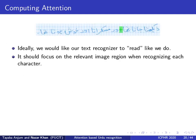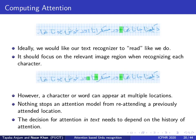Ideally, we would like our text recognizer to read like we do — focusing on the relevant image region when recognizing each character or word. However, for images containing text, a character or word can appear at multiple locations. Nothing stops an attention model from re-attending a previously attended location or from giving the right answer by attending the wrong location. Therefore, for text, the decision for attention needs to depend on the history of attention. In simpler words, where to focus next depends on where you have focused previously.